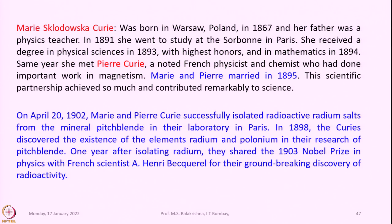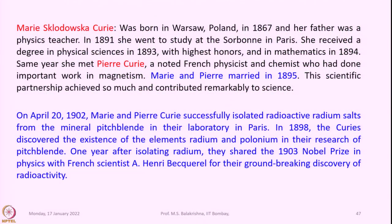Now let us look at an important chemist and physicist who contributed significantly to the understanding of radioactivity — Marie Curie. Marie Curie was born in Warsaw, Poland in 1867 and her father was a physics teacher. In 1891 she went to study at the Sorbonne in Paris, where she received a degree in physical sciences in 1893 with highest honors and in mathematics in 1894.